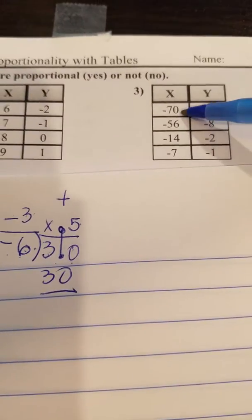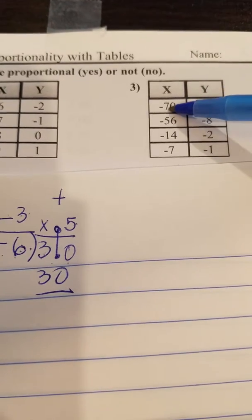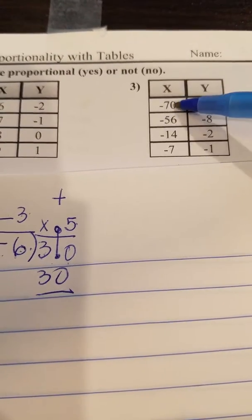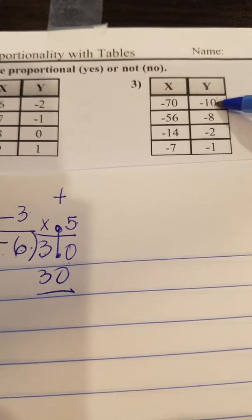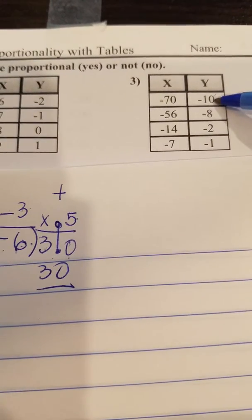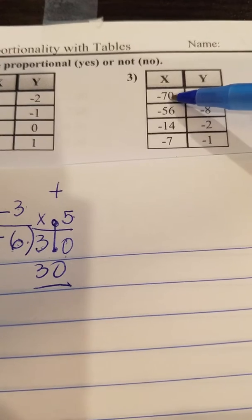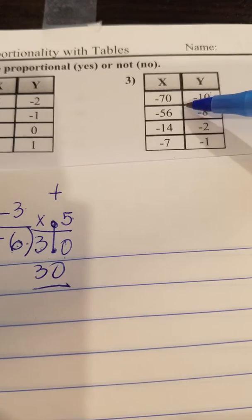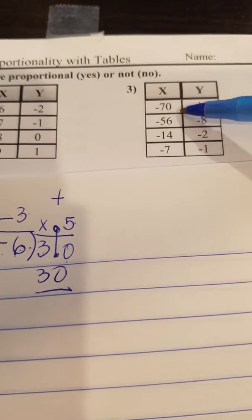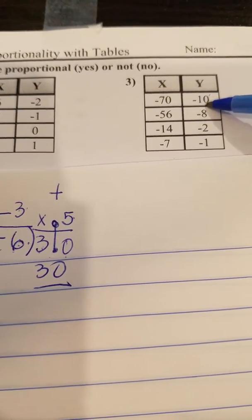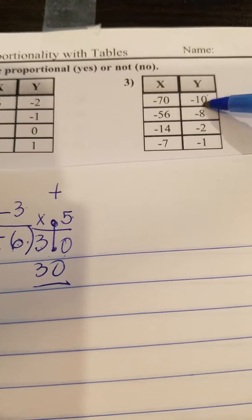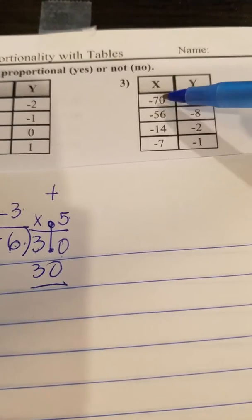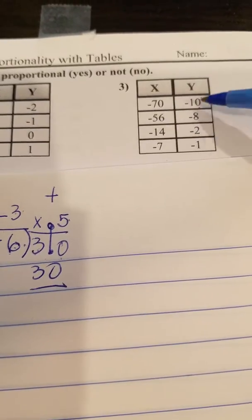First, you kind of start looking at it. You say, what is the relationship? X times what equals Y? Or you could even say X divided by what is going to equal negative 10? Well, I already know negative 70 divided by 7, I mean, actually positive 7 is going to equal negative 10. Because a negative and a positive is going to equal a negative. And 70 divided by 7 is going to give me 10.